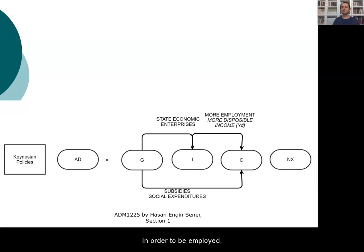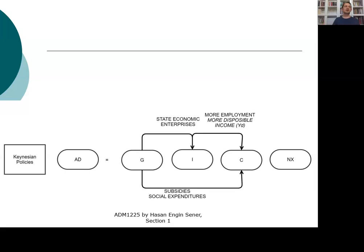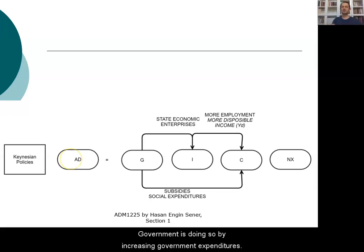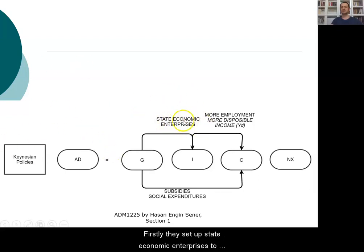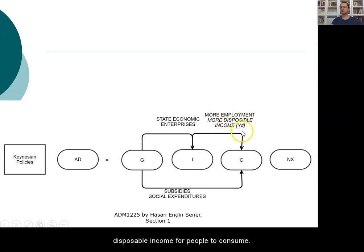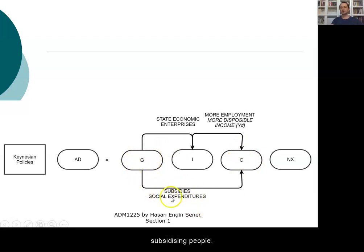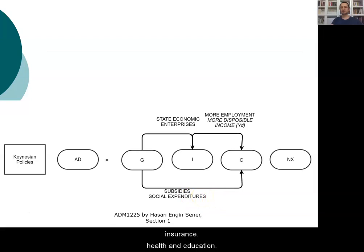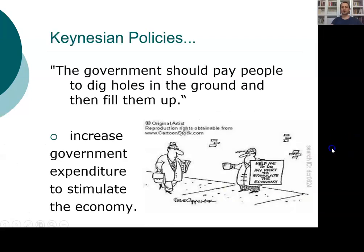In order to have disposable income, you need to be employed. In order to be employed, a job must be created and a factory set up. Since private investment cannot set up new factories on its own, another actor is needed — the government. Government does this by increasing expenditures: setting up state economic enterprises to boost public investment, creating more employment and disposable income for people to consume. Government expenditures can also subsidize people and increase social spending such as insurance, health, and education.